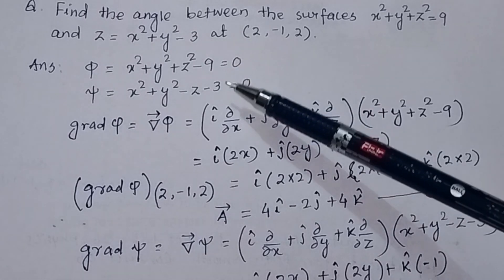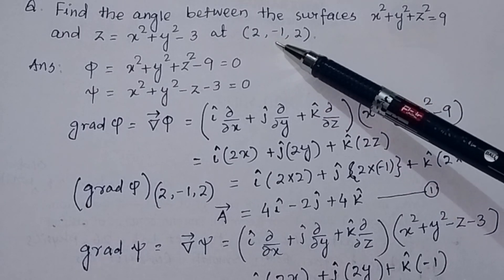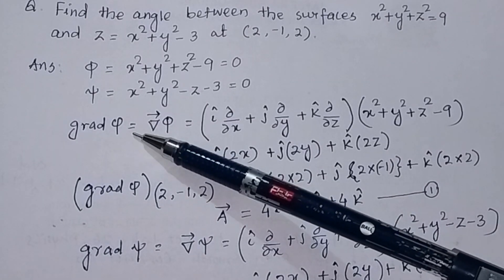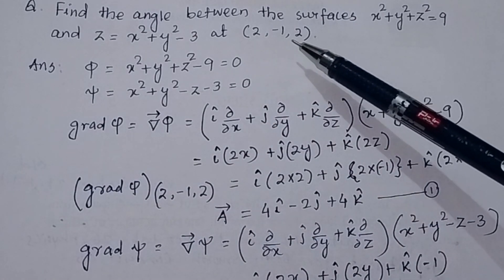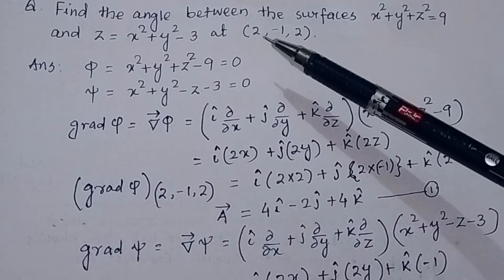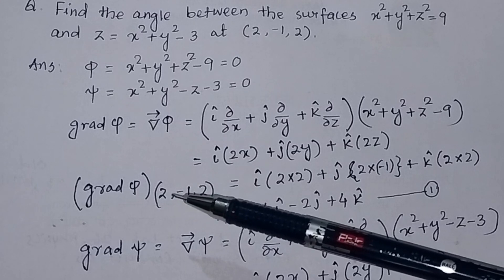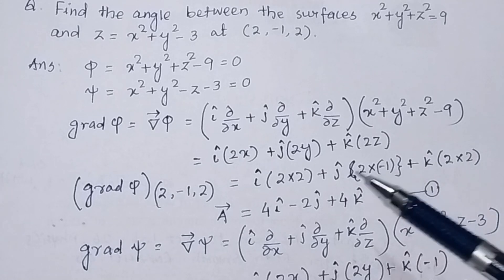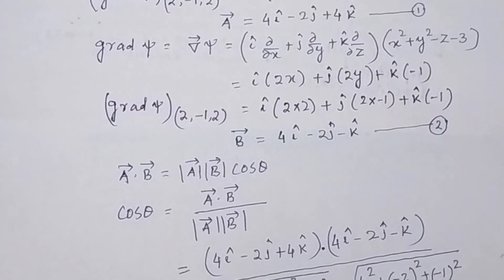We have to find the angle between the two surfaces at the point (2, −1, 2). To find the angle, first we find the gradient of the first surface, then evaluate it at the point (2, −1, 2). Similarly, we find the gradient of the second surface at that point. The gradient of φ will be called vector A, and the gradient of ψ will be called vector B.